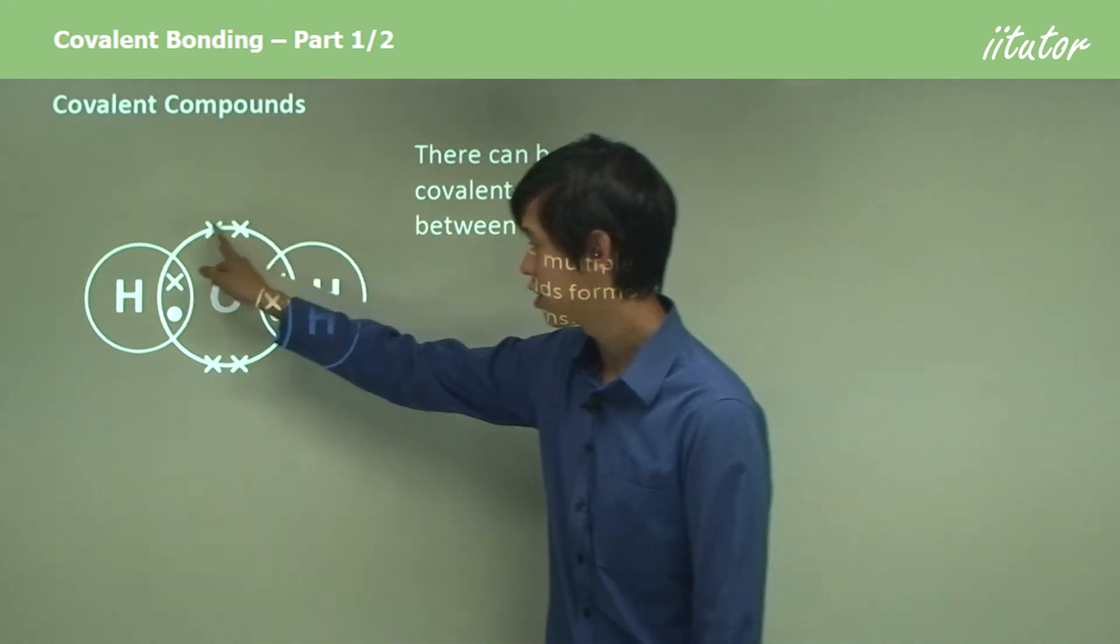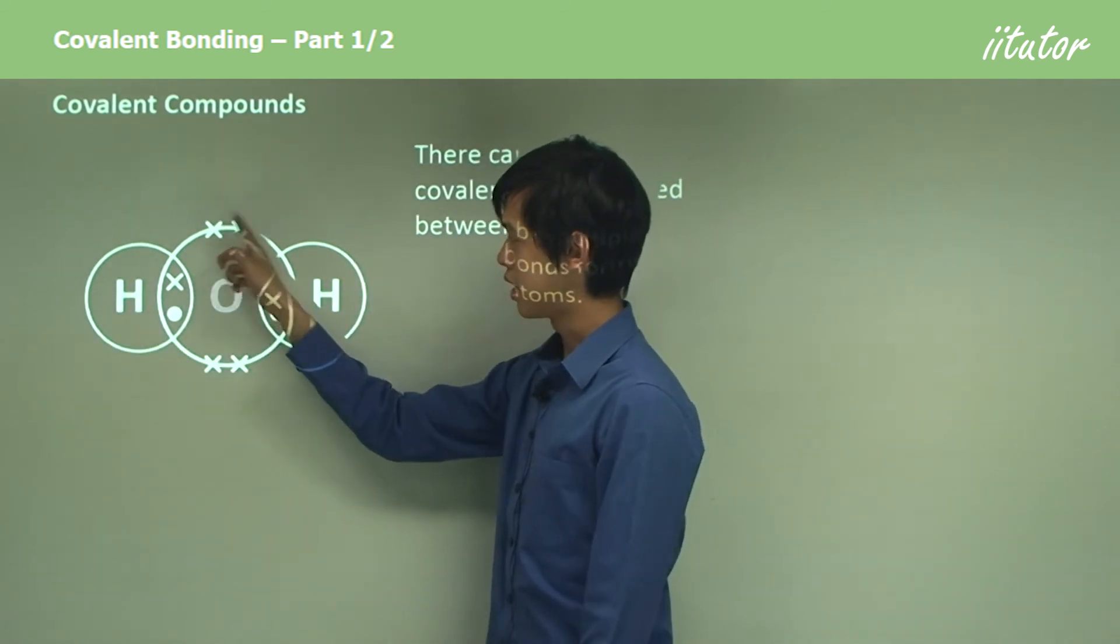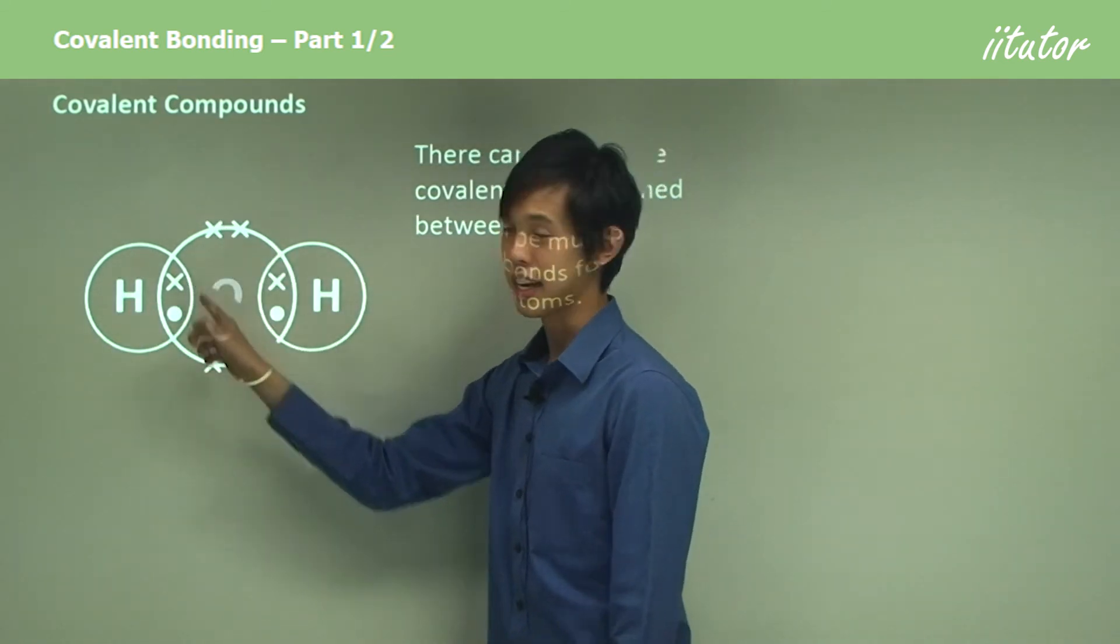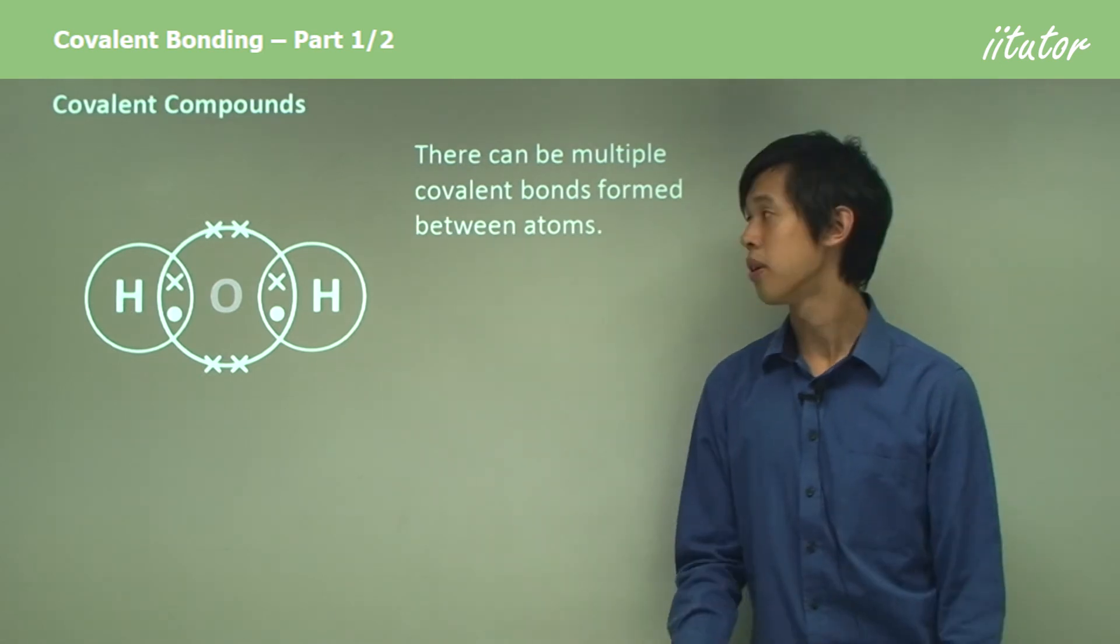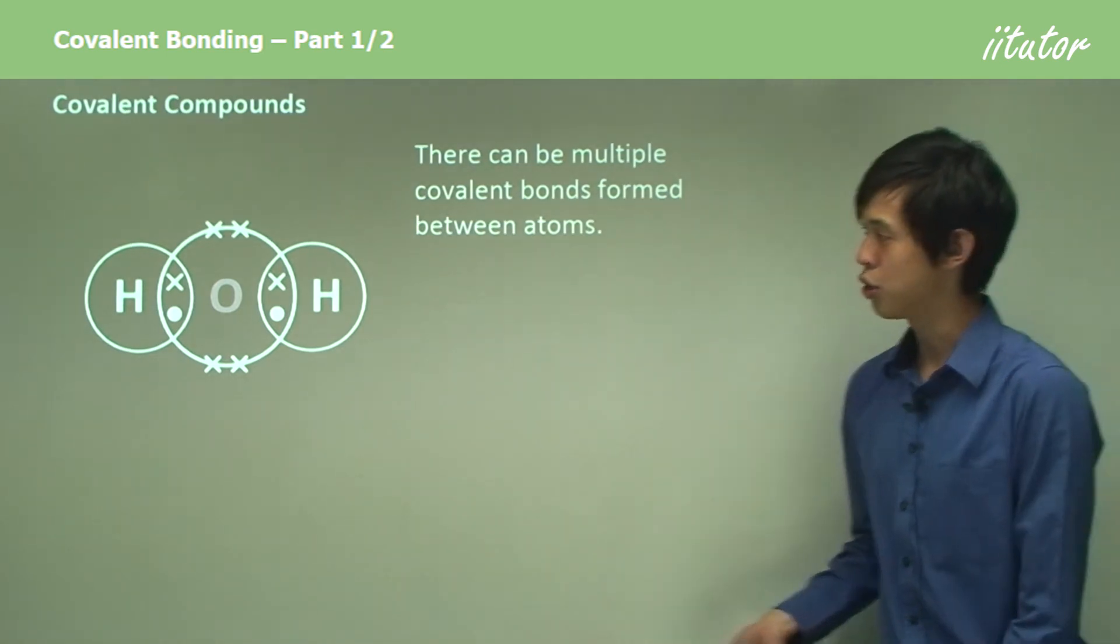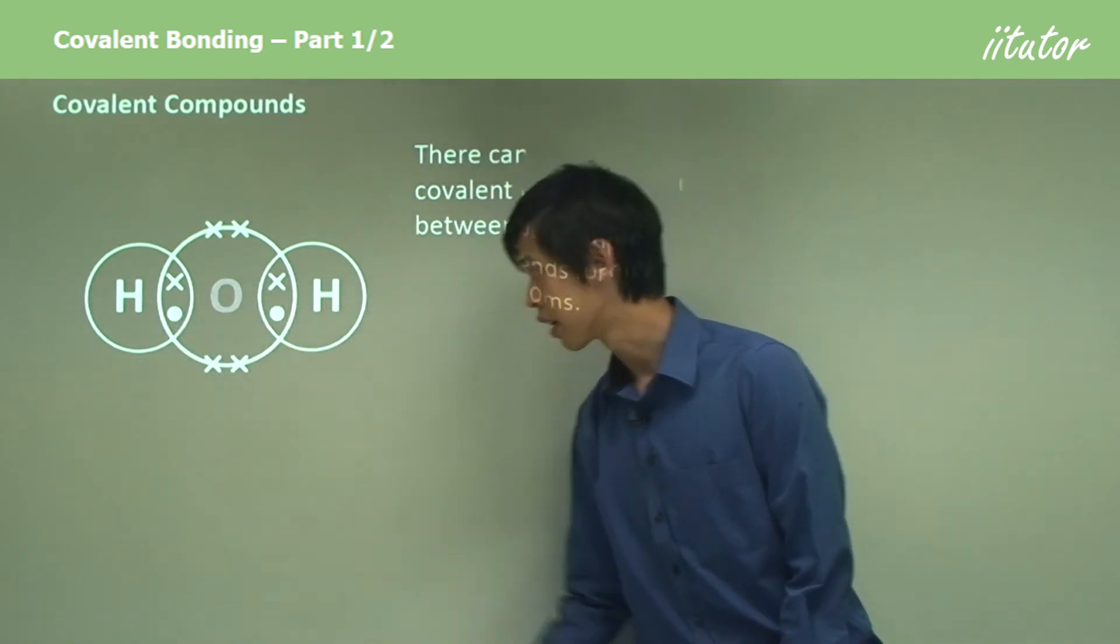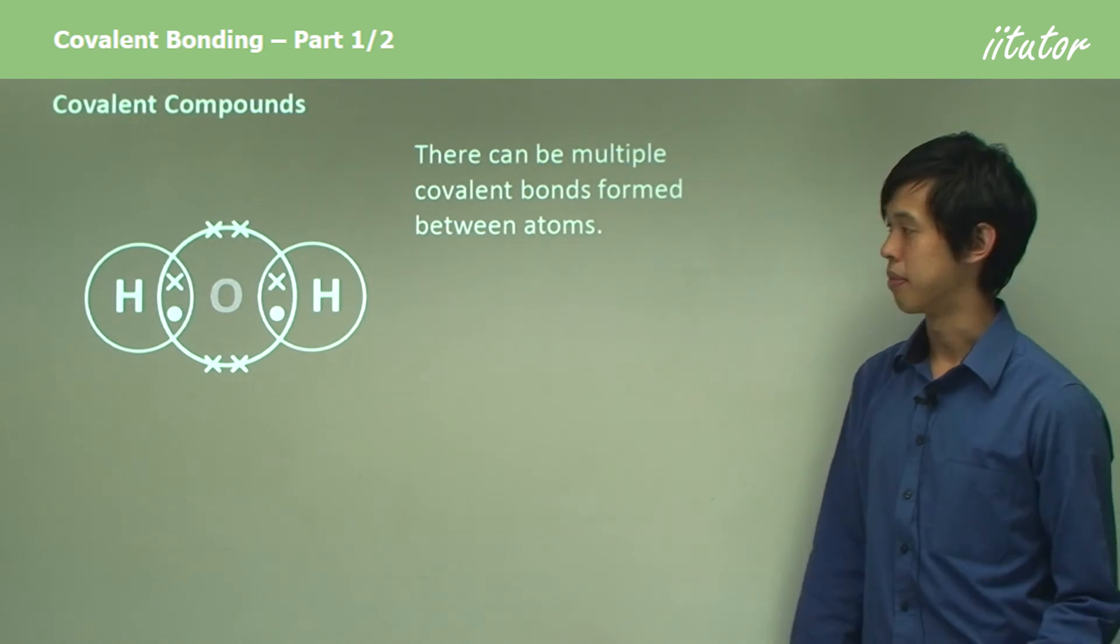Now the oxygen in the middle, if you ignore the H's, cross out the H's, you can see there's one, two, three, four, five, six, seven, eight. So it has eight electrons, so it's also stable. But you can see that the number of covalent bonds formed was two. There's one covalent bond here and one covalent bond here. So you can see that's how things sort of panned out.